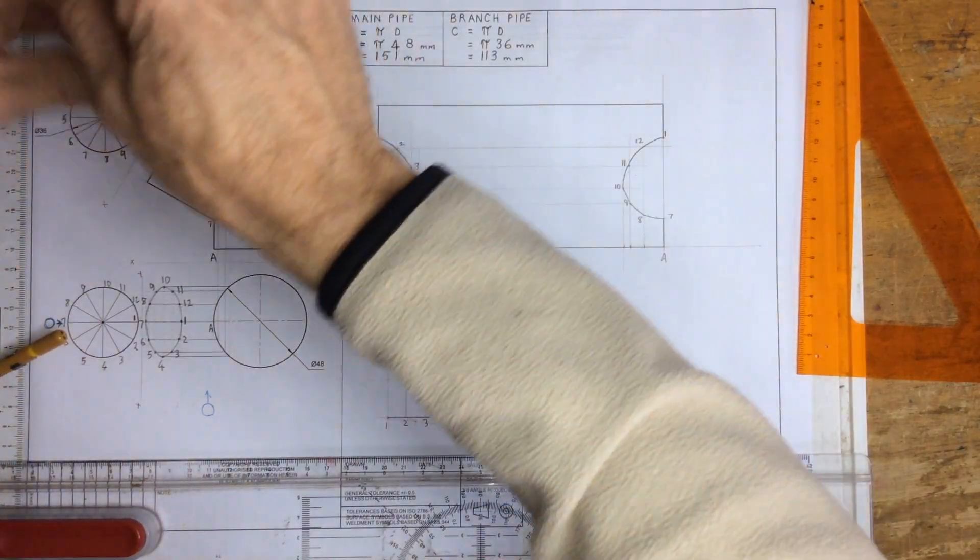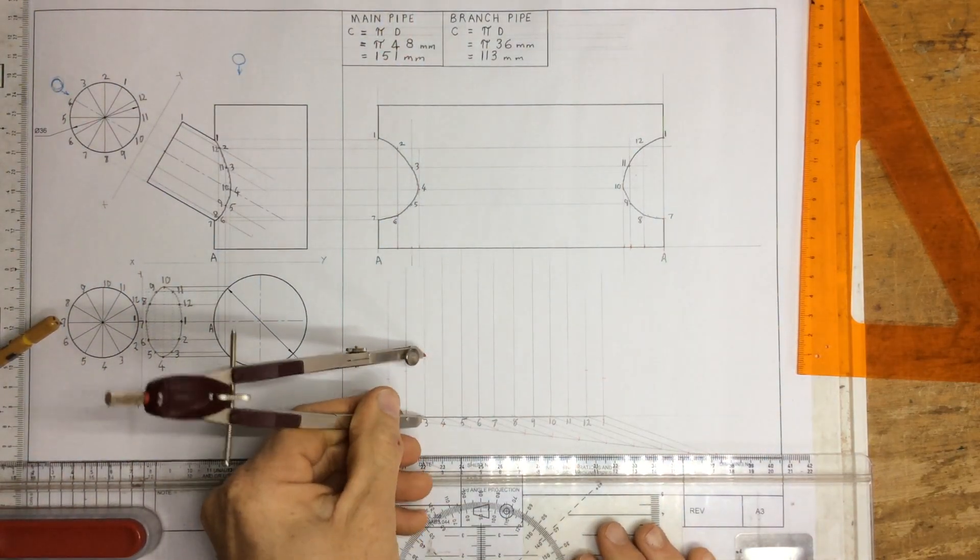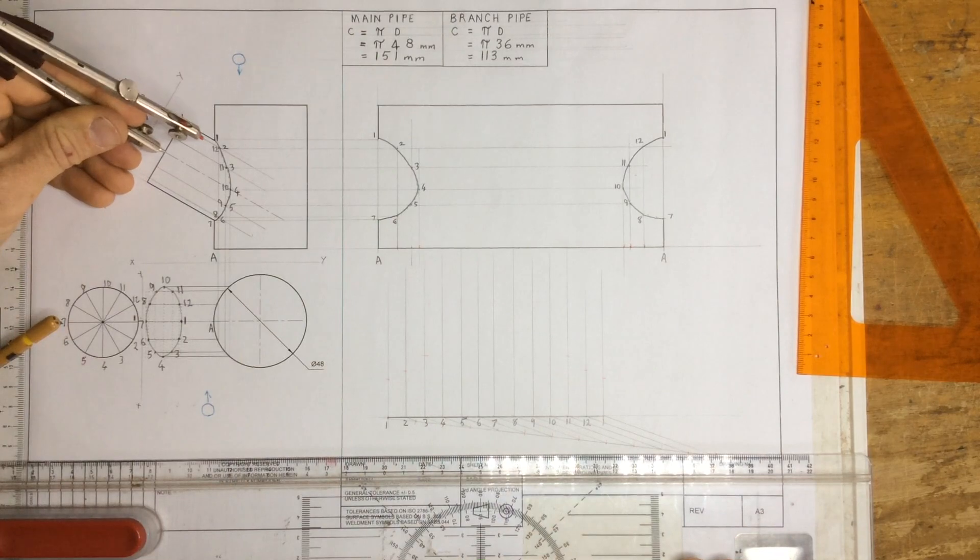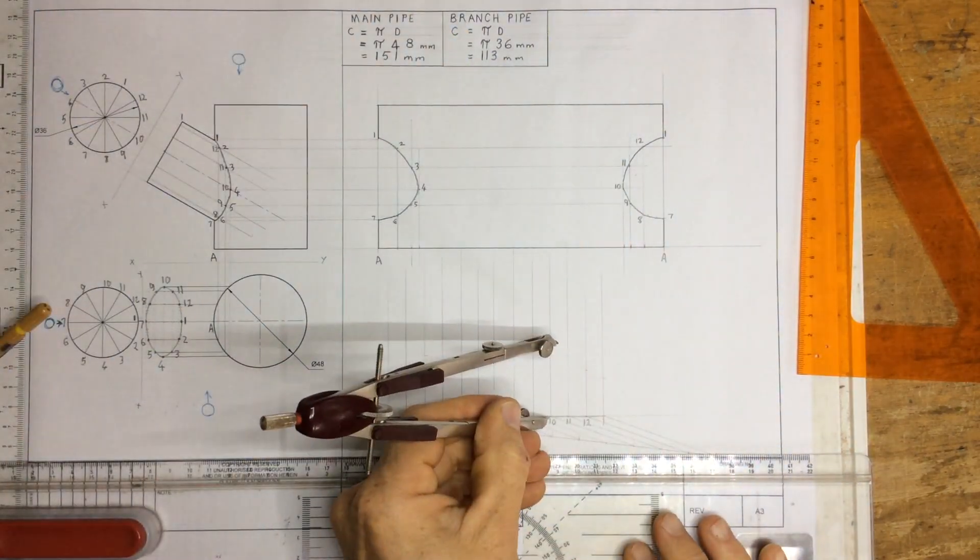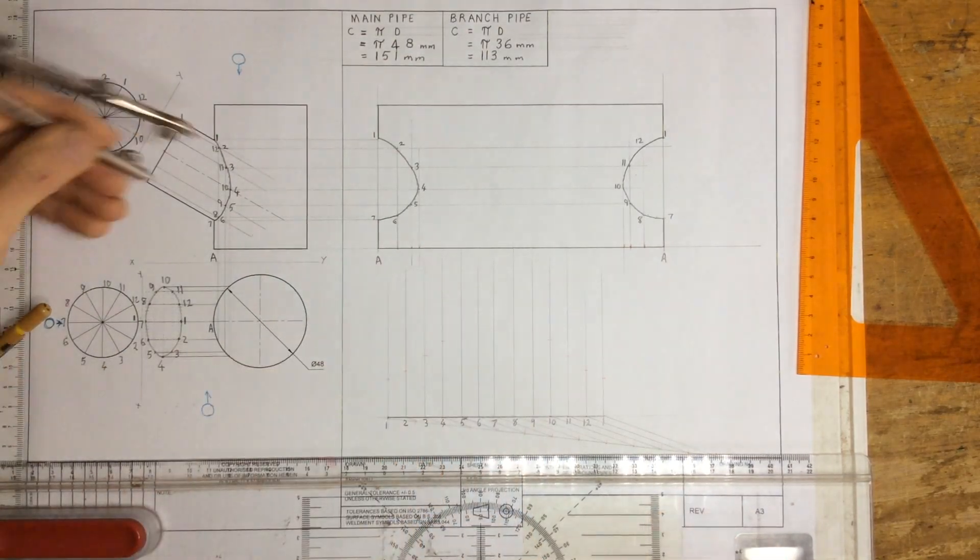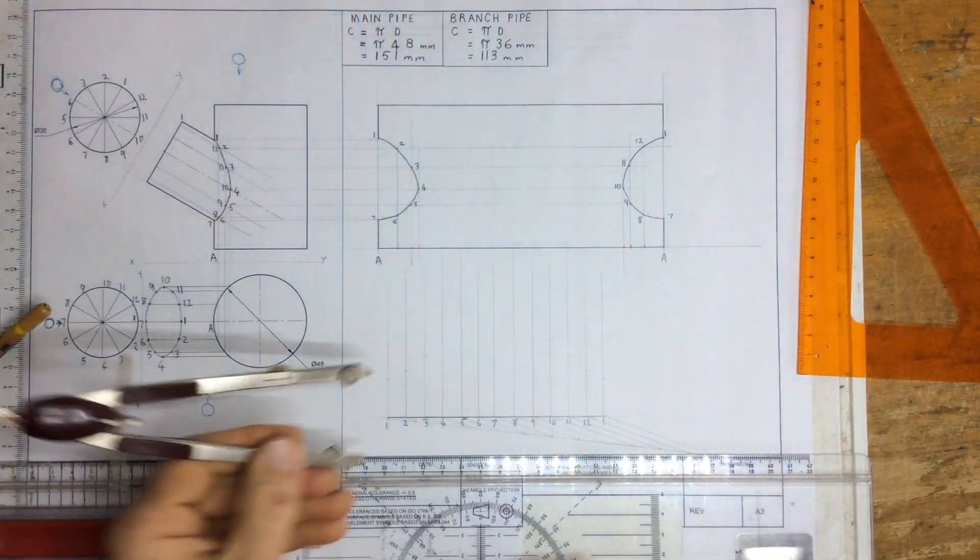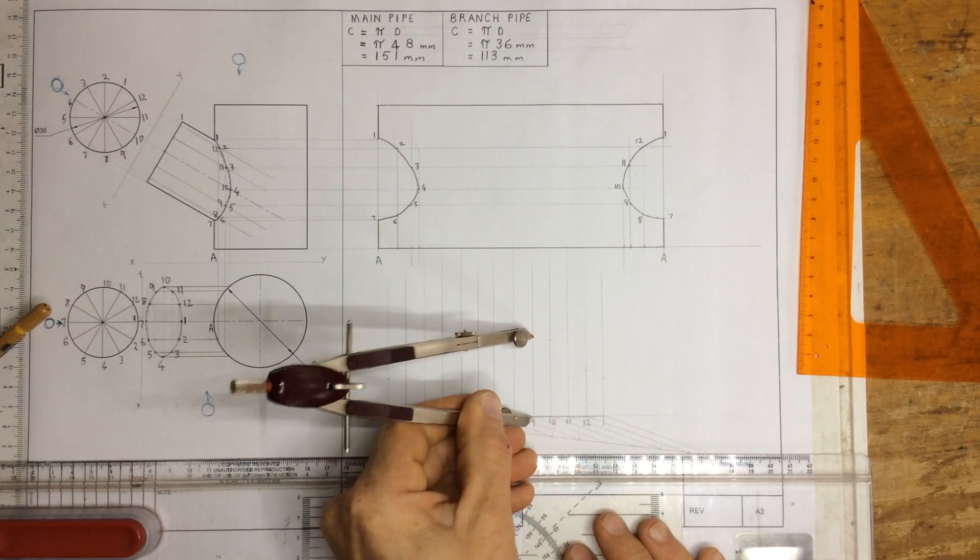There's 3 and 11, there's 10 and 4, there's 10 and 4. Take the distance 5 and 9, there's 5, there's 9.